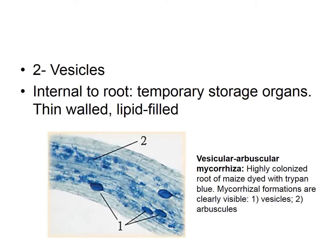Another structure formed with endomycorrhizae is vesicles. Vesicles are also internal to the root cells and serve as temporary storage organs. They have thin cell walls or plasma membranes and can be filled with lipids. Here you can see the vesicle structures that the mycorrhizae use to store fat or lipids, making them storage organs. So endomycorrhizae can clearly form structures like both vesicles and arbuscules.